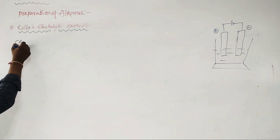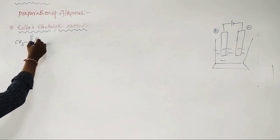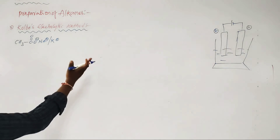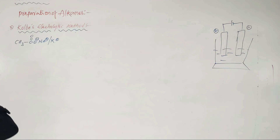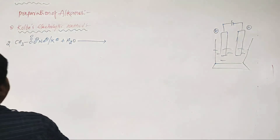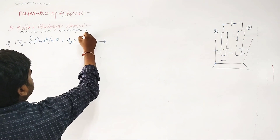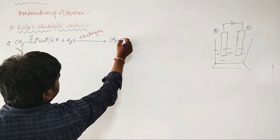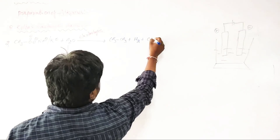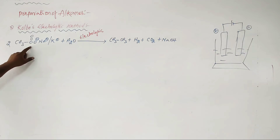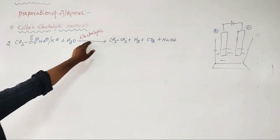Sodium and potassium salts of carboxylic acids — for example, CH3COONa — are dissolved in aqueous solution. 2 moles of the sodium salt plus H2O undergo electrolysis to give an alkane, plus H2, plus CO2, plus NaOH. This is the simple overall reaction of Kolbe's electrolytic method.